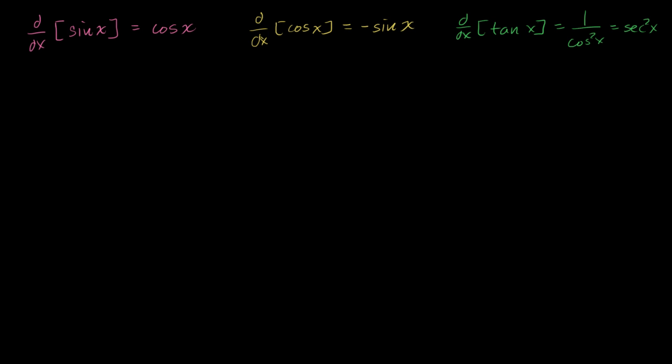Now, let's talk a little bit about exponentials and logarithms. So the derivative, and actually, this is one of the coolest results. And it, once again, speaks to how cool e is as a number. The derivative with respect to x of e to the x, we need a drum roll for this one. This is one of the coolest things in mathematics. The derivative of e to the x is e to the x.